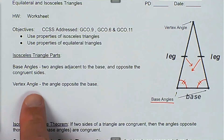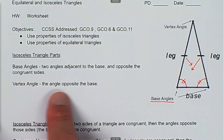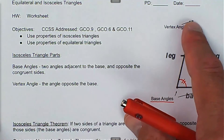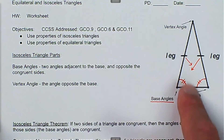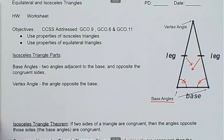Then we have the vertex angle. The vertex angle is the angle that's opposite the base — there's the vertex angle, opposite the base.